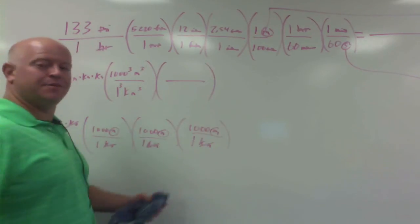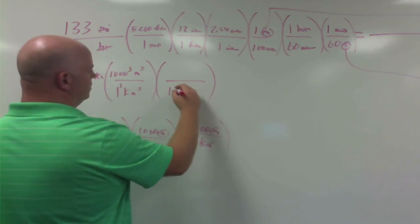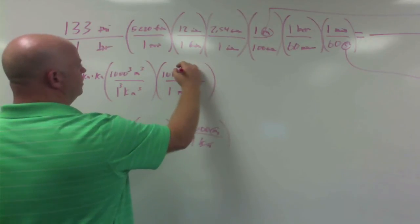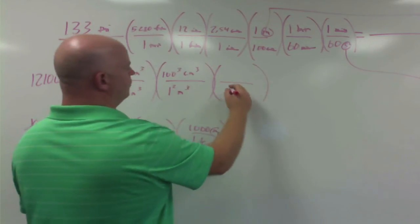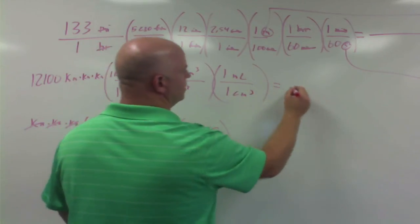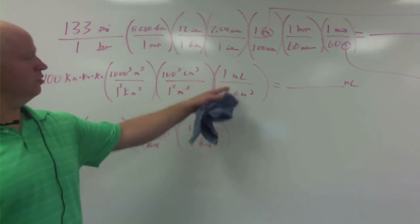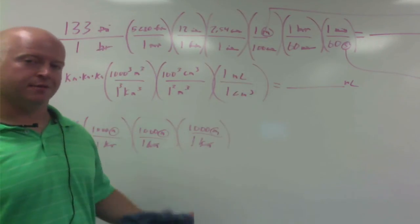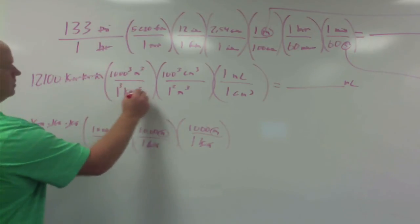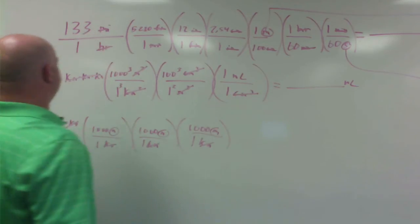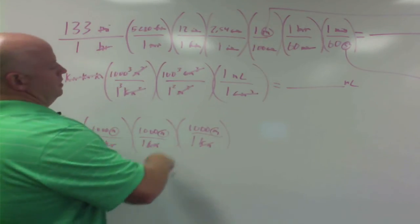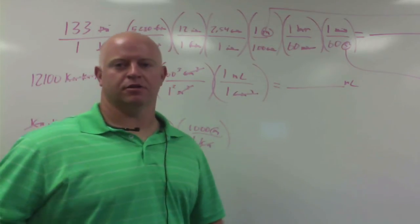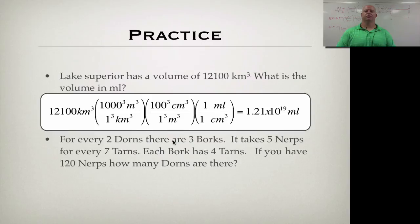Now, I can keep that same thought process and keep working through. So for every one meter cubed, I get 100 cubed centimeters cubed. And then for every one centimeter cubed, I know that's one milliliter. And that gives me my answer, the milliliters. This one we don't cube because this is a true volume measurement and not a length measurement. So now when you do your math, kilometers cancels, meters cancel, centimeters cancel. And you end up with 12,100 times 1,000 cubed times 100 cubed times 1 gives you your answer. You have to cube it. All right. Take a look. We get 1.21 times 10 to the 19th milliliters. It's a lot of water.